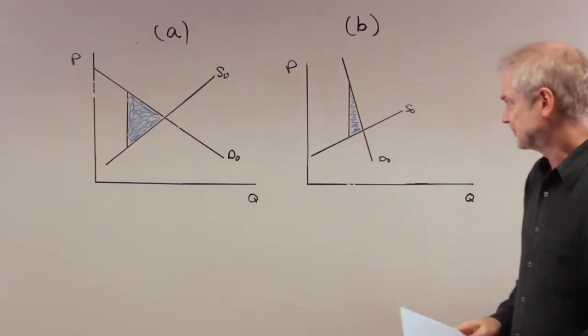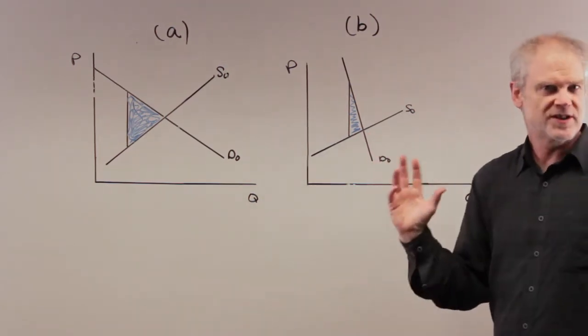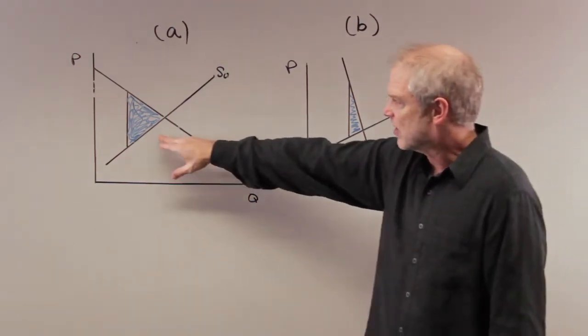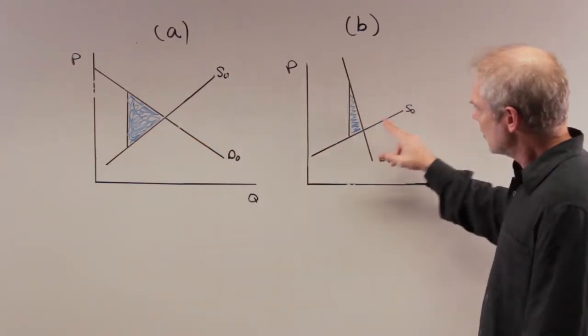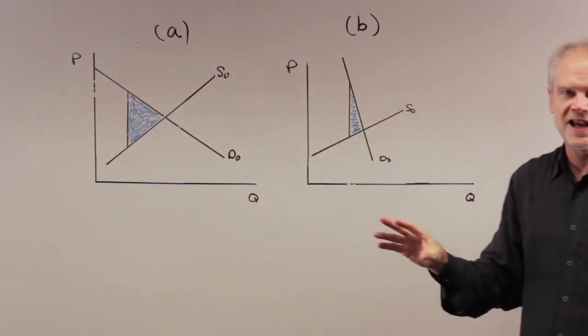All right, here's our deadweight loss. Where is the deadweight loss larger? The deadweight loss is clearly larger here. We've drawn the supply curves, I've tried to anyway, so that they have the same relative elasticity.